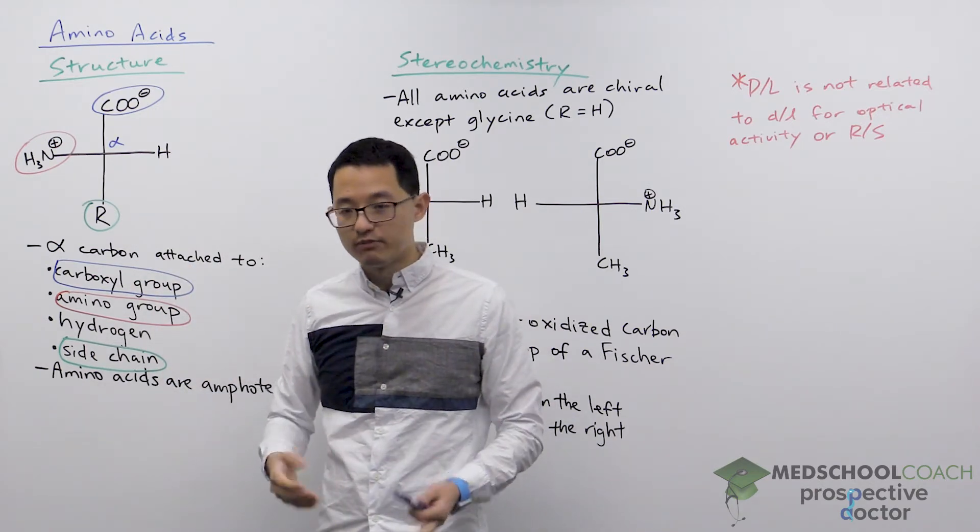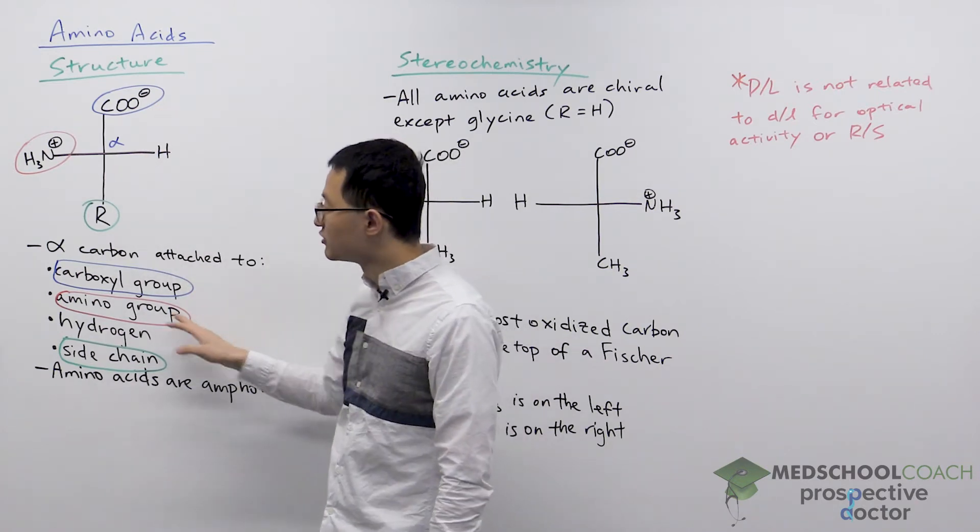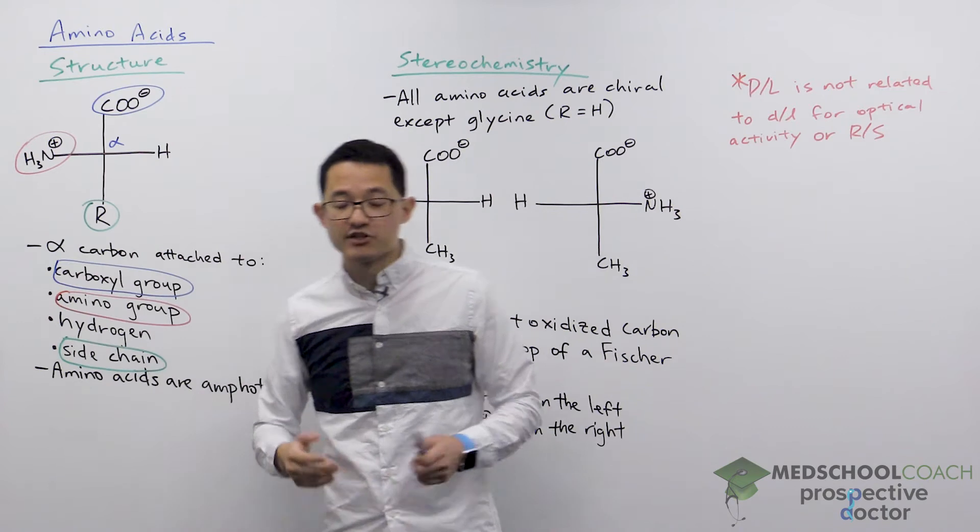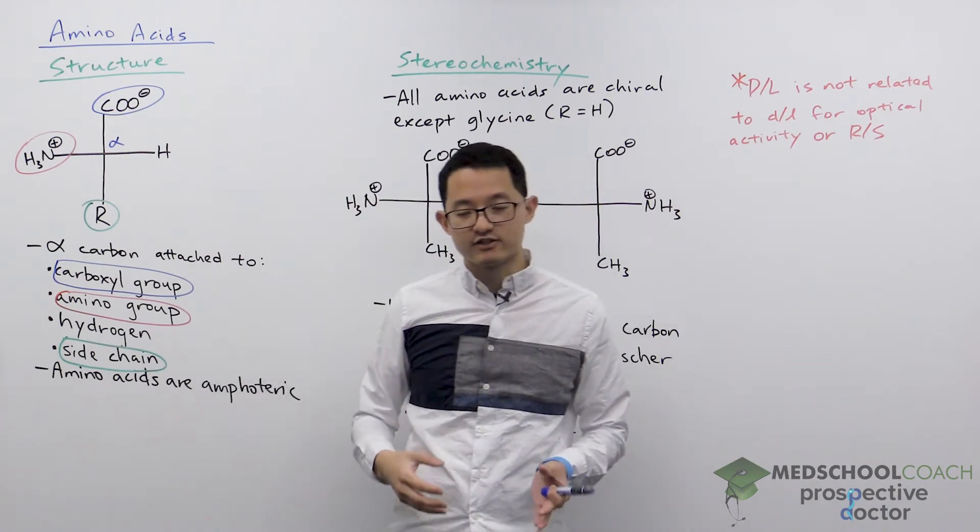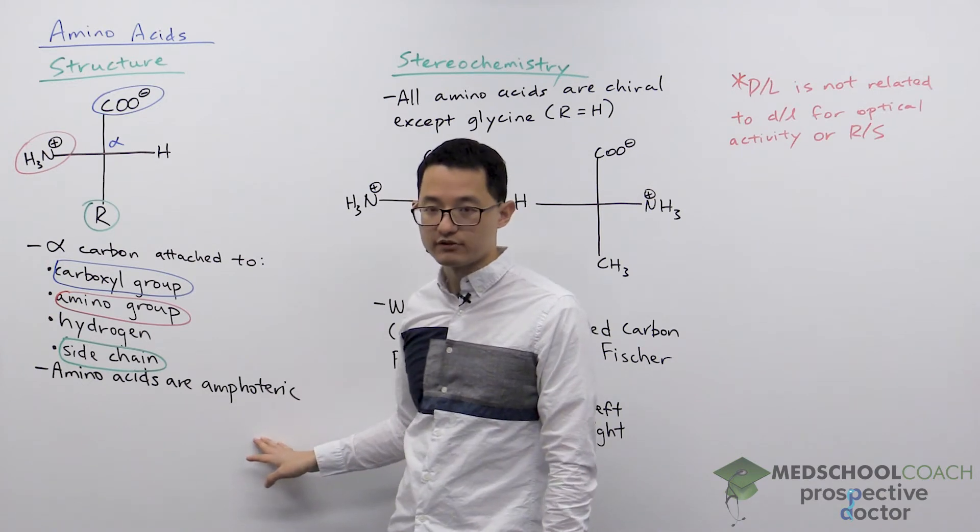What's unique about amino acids is that the carboxyl group is acidic and the amino group is basic. As a result amino acids can act as both acids and bases so we say that they are amphoteric molecules.